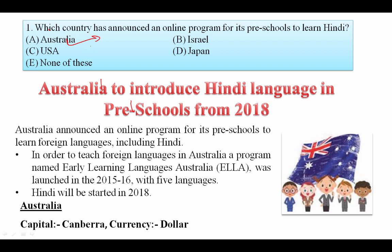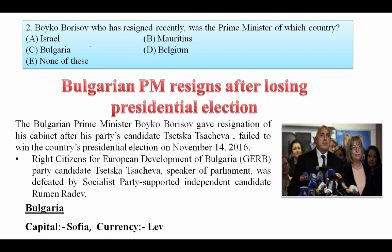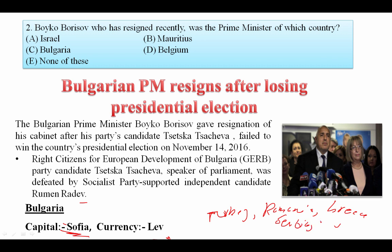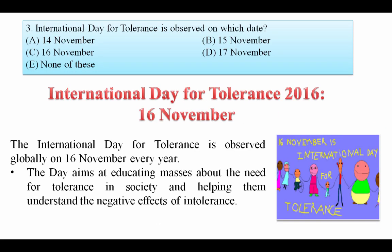Boyko Borisov, who resigned recently, was the Prime Minister of which country? The Bulgarian Prime Minister Boyko Borisov gave resignation of his cabinet after his party's candidate Tsetsva Tsacheva failed to win the country's presidential election on November 14. The capital of Bulgaria is Sofia, the currency is Lev, and the neighboring countries include Turkey, Romania, Greece, Macedonia, and Serbia. The answer is Bulgaria.